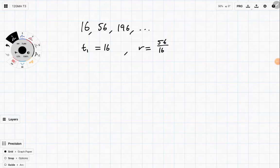So you can see I've got 56 divided by 16, and that gives me 3.5. And just to double check that I haven't made a mistake, let's divide the next pair of terms, 196 divided by 56. And that's also equal to 3.5. So the common ratio is 3.5.